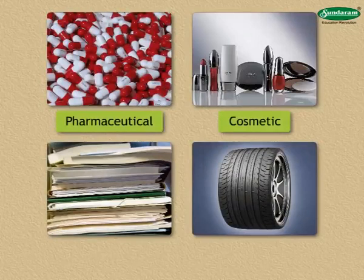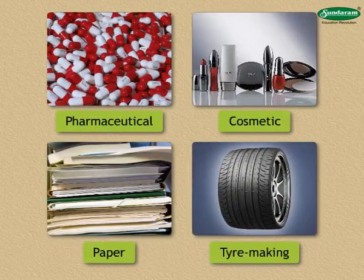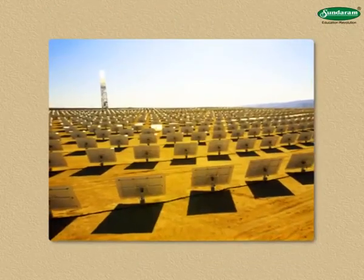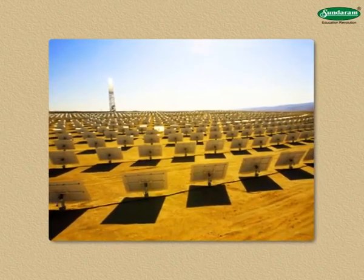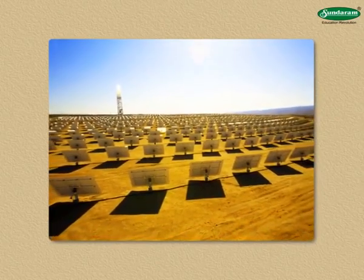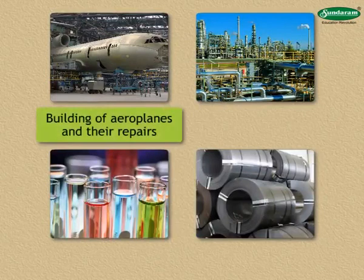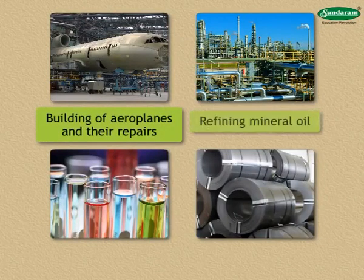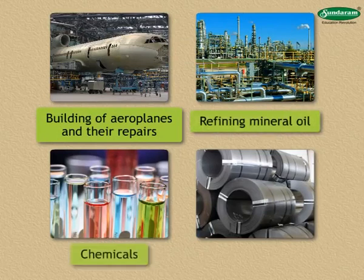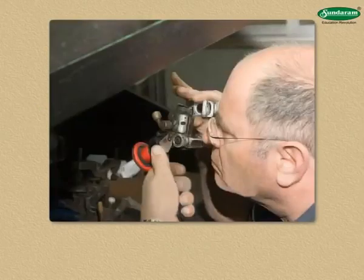There are pharmaceutical, cosmetic, paper, and tire-making industries in this country. The energy required for these industries is generated within the country itself. Other factories include building and repairing aeroplanes, refining mineral oil, chemicals, and steel. Diamond cutting is also a big industry here, and cities have grown very fast because of industrialization.